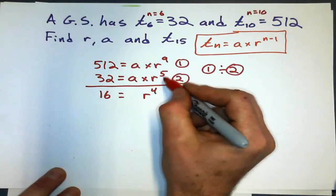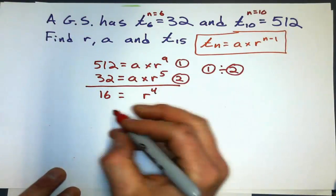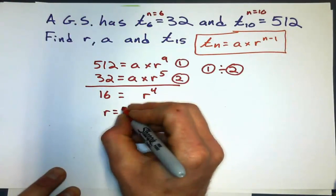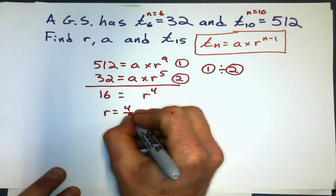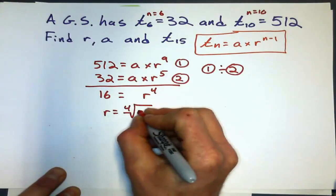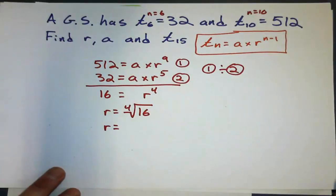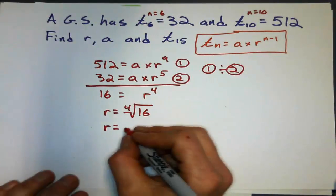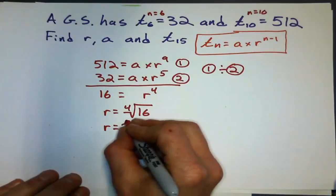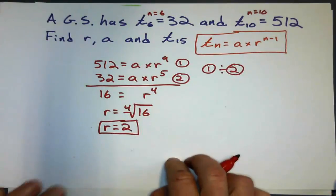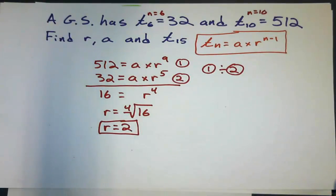You don't divide those exponents, you subtract them. So the common ratio is the fourth root of 16, which is 2. Great, we've got the common ratio.